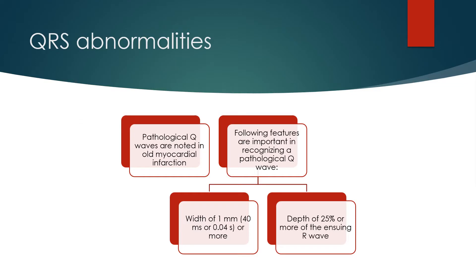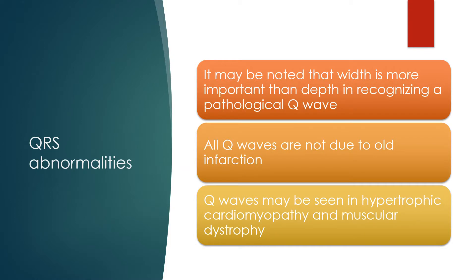Pathological Q waves are noted in old myocardial infarction. The following features are important in recognising a pathological Q wave: a width of 1 mm or more, and a depth of 25% or more of the ensuing R wave. It may be noted that width is more important than depth in recognising a pathological Q wave.